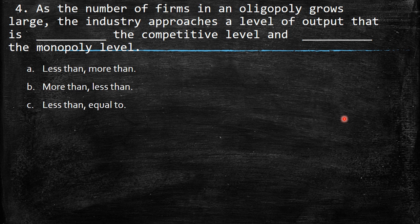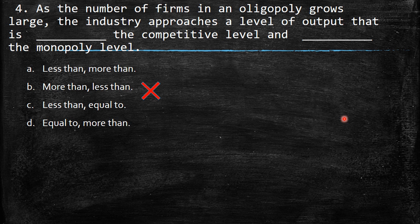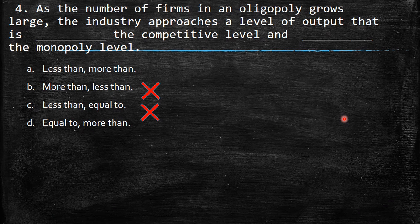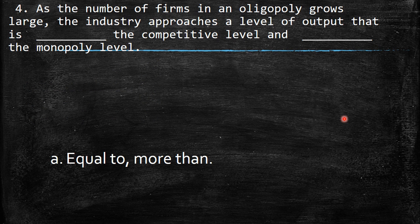You cannot produce more than the competitive level, and it approaches — though is not exactly equal to — the competitive level. The answer is: equal to the competitive level and more than the monopoly level, because as firms grow in number, output approaches the competitive equilibrium.